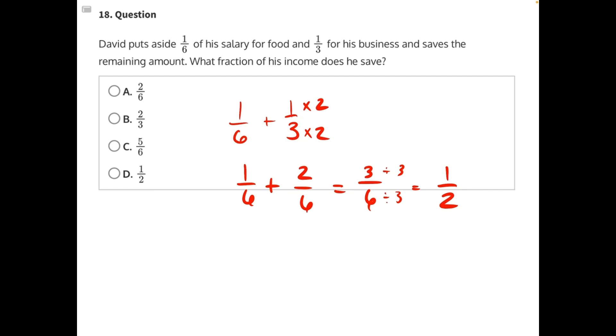So what fraction of his income does he save aside from the money he puts away for food and for his business? One minus one-half would just give us one-half, one representing the whole of his salary. Making D our correct answer.